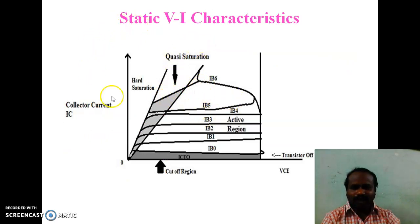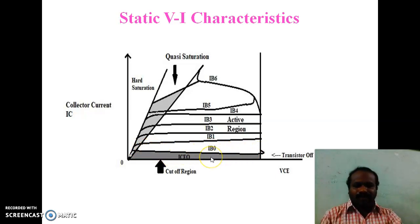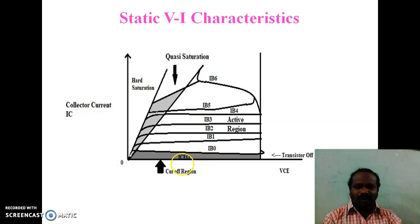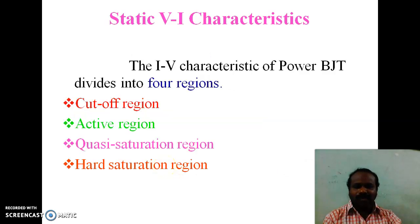In this static VI characteristics, IB is 0. Because the input current is 0, the output current is only the leakage current, that is ICEO. In this region, it acts as an open switch because it offers a high value of resistance.